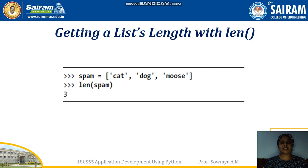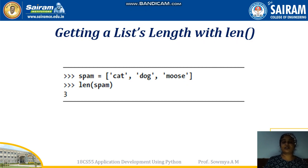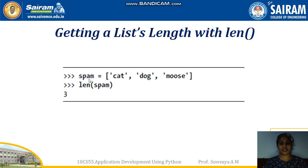Next is getting the list length with len(). For example, spam = ['cat', 'dog', 'mouse']. Instead of counting elements manually with a for loop, you can use the len() function. Passing the list name as an argument to len() directly returns the length of that list.